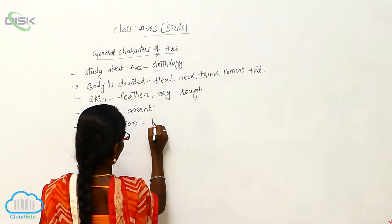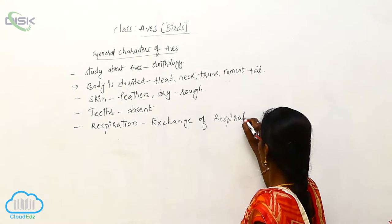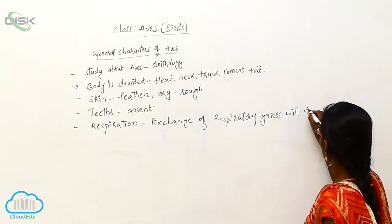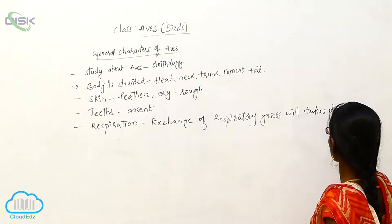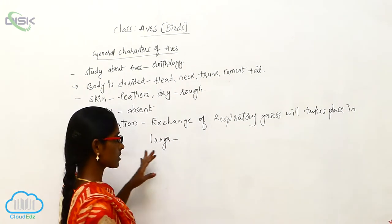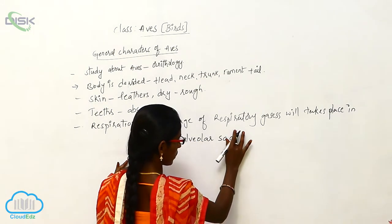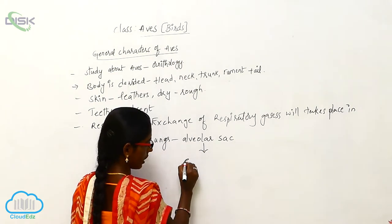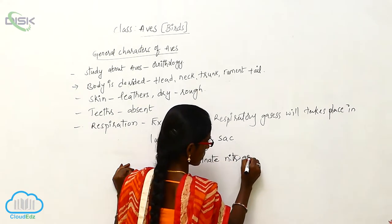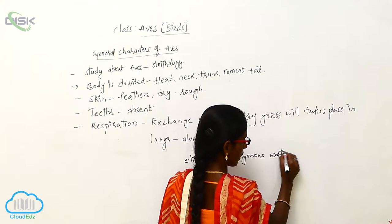Respiration: the exchange of respiratory gases takes place in the lungs. The lungs have alveolar sacs, which help eliminate nitrogenous waste material.